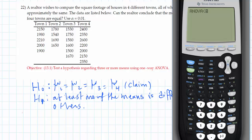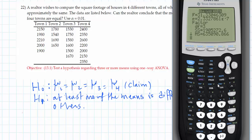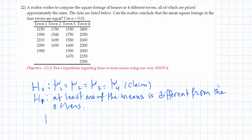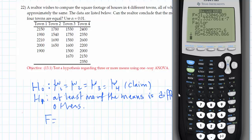All you need to do is enter the lists you are using. For L1, press 2nd and number 1, then comma, 2nd and number 2, comma, 2nd number 3, comma, 2nd number 4, close parentheses, press ENTER. You will get the test statistic, which is an F distribution test. F equals 31.33 and the p-value is 2.33 × 10⁻⁷, which is a very small value.